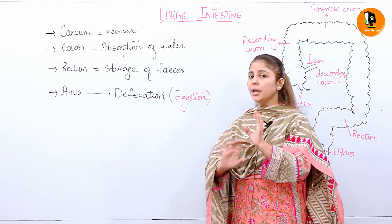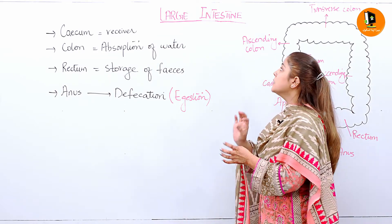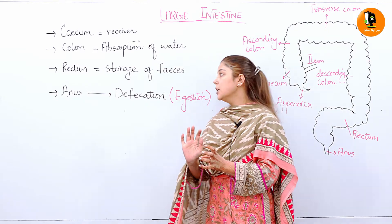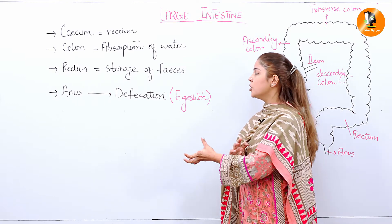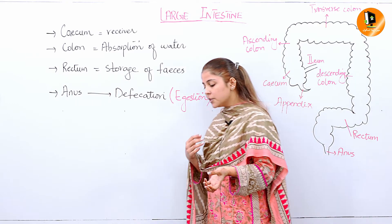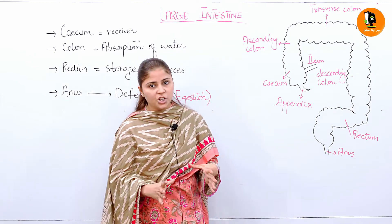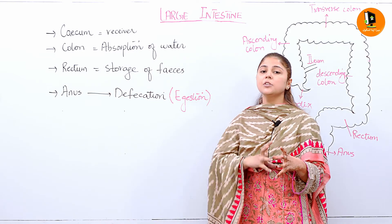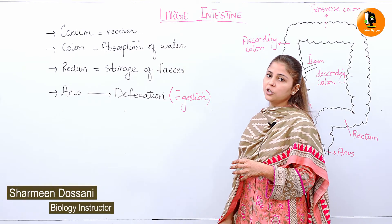So jab absorption ho gayi hai, hard stools ban chuke hain, rectum mein store ho jayenge. This is the process — storage ho chuki hai feces ki. Then in the anus, this stool will just pass out as an ejection process, known as defecation. Jaise humne start mein video mein discuss kiya tha ke hamare saat processes hote hain, jis ka last step tha ejection — it means just excrete out from the body. That excretion is called defecation.